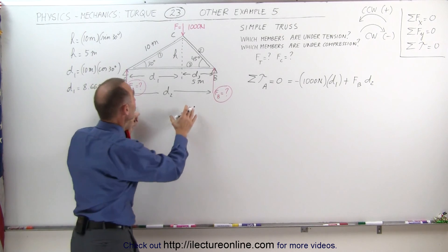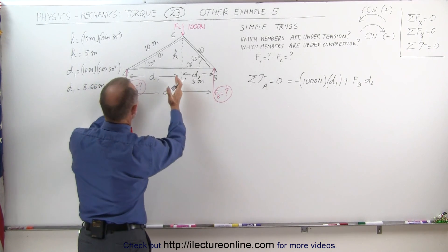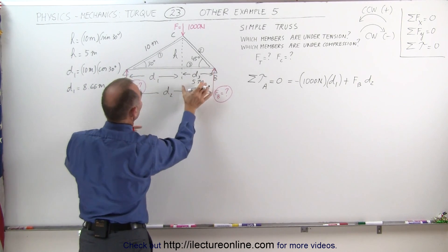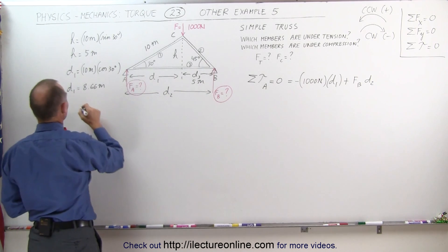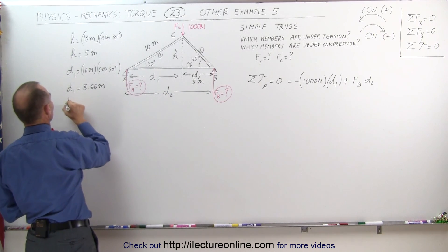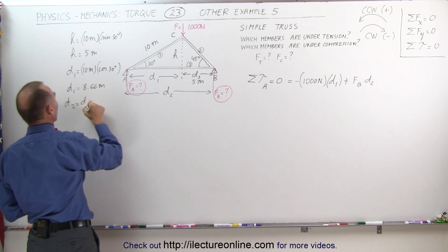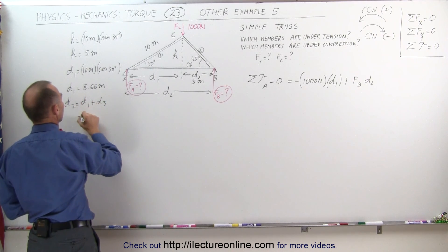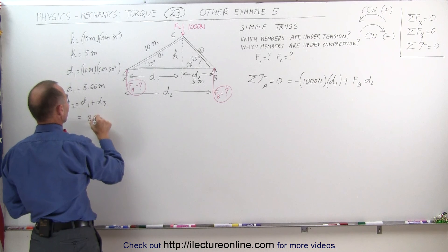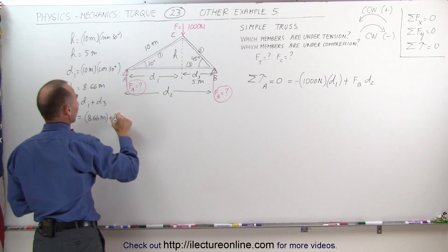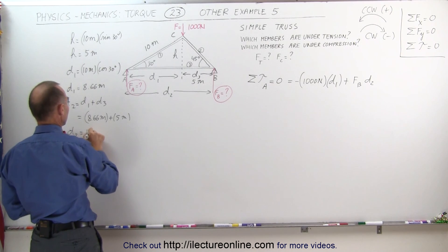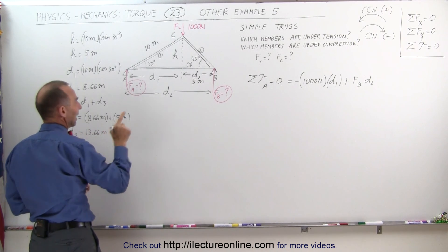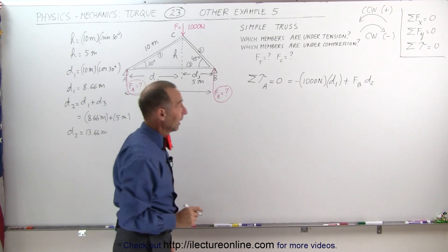Now to find D2, we add D1 plus D3. Since D3 is 5 meters and D1 is 8.66 meters, D2 equals D1 plus D3 — that's 8.66 meters plus 5 meters — so D2 equals 13.66 meters. Now we're ready to solve.